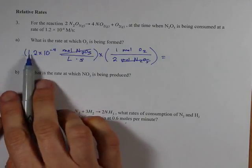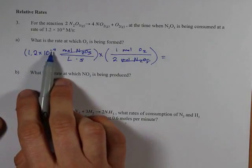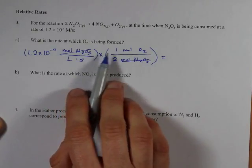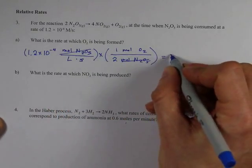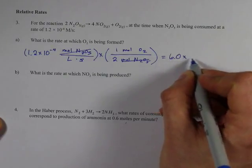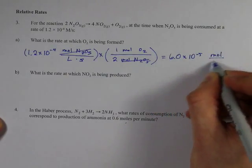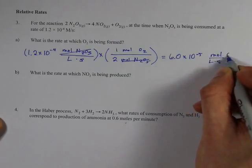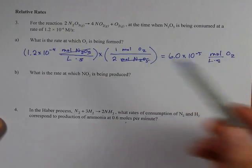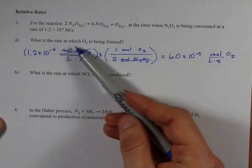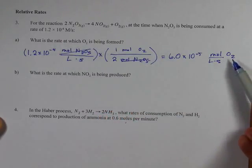What you do is you take this number, 1.2 × 10^-4, multiply it by 1/2, and you get your answer, which ends up being 6.0 × 10^-5 moles per liter per second of O2, although since the question said what is the rate at which O2 is being formed, it's kind of implied.